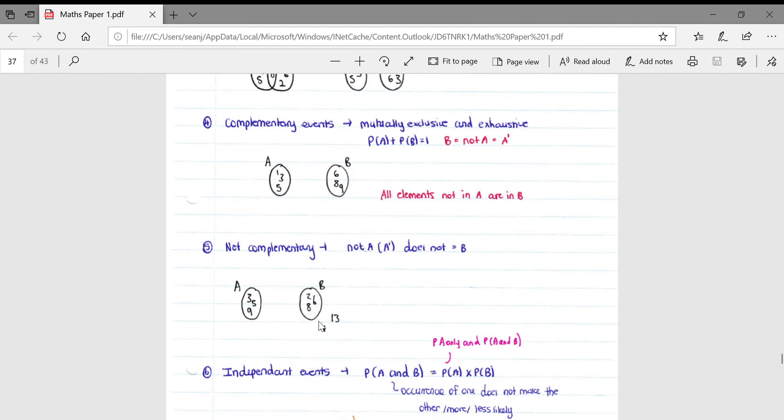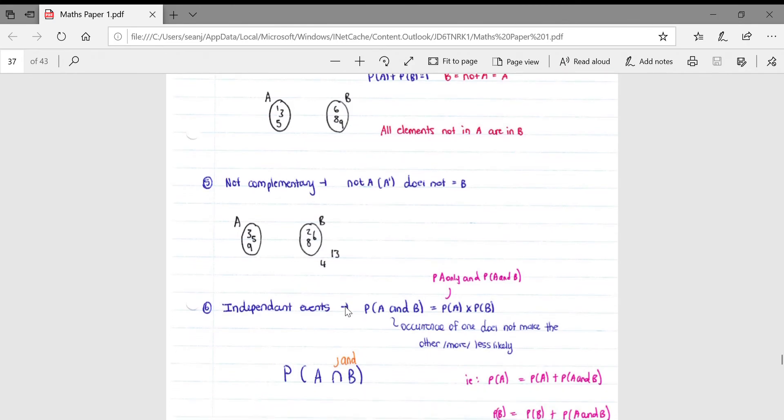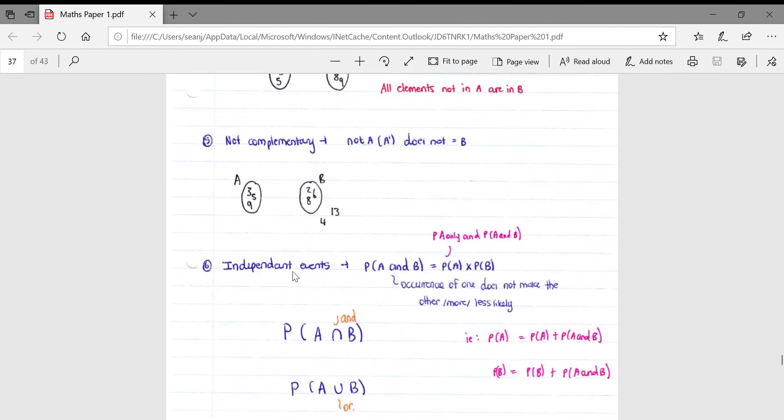So where in this diagram do we experience not A? You can either select something of B, or you can select these numbers on the outside. Both of these events are not A. However, if we look at B, B is only within the circle, so that means that not A will not be equal to B.